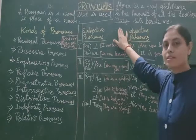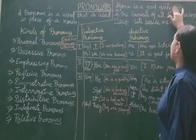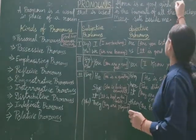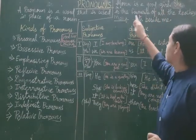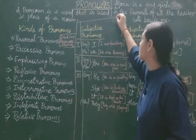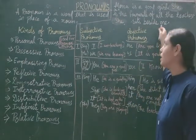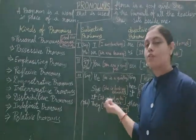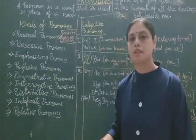So to avoid this repetition we use pronouns. For Mona, as Mona is a girl, we will use 'she'. So: 'Mona is a good girl. She is the favorite of all the teachers. She sits beside me.' We are using pronouns to avoid repetition of a noun in a sentence.